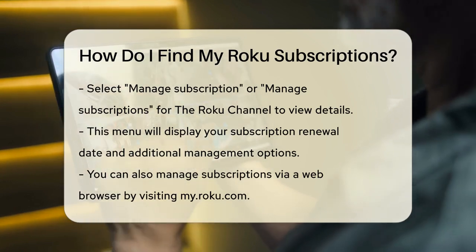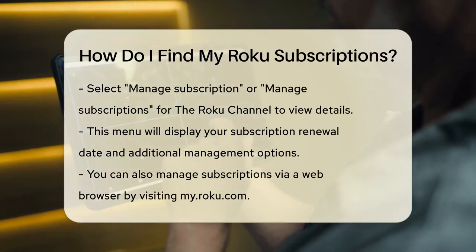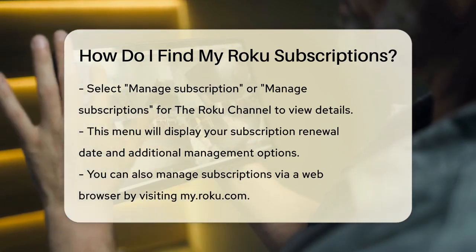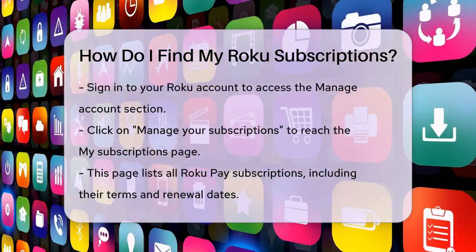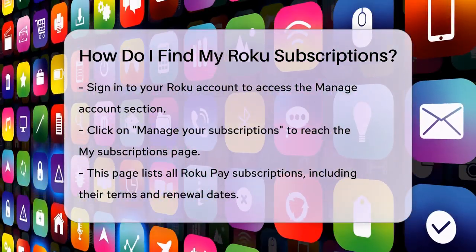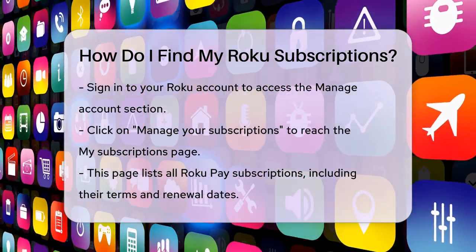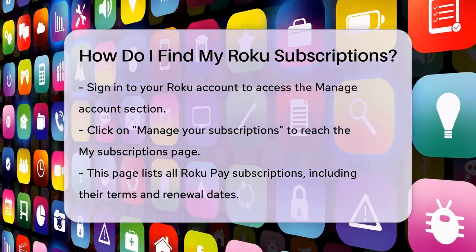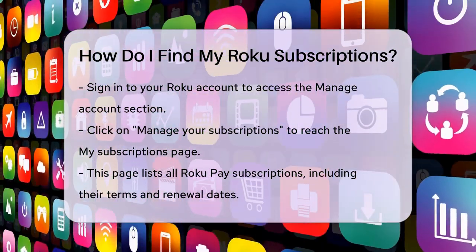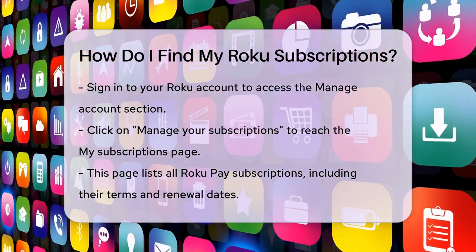If you prefer to manage your subscriptions from a web browser, you can do that too. Go to my.roku.com on your computer or smartphone and sign in to your Roku account. Under the Manage Account section, click on Manage Your Subscriptions. This will take you to the My Subscriptions page, where you'll see all your Roku pay subscriptions listed along with their terms and renewal dates.